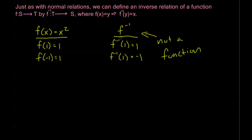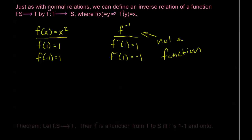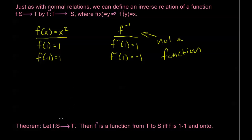So, how do we know that the inverse of a function is still going to be a function? As we've seen, it's not always a function — some functions are not invertible into functions in this way. We do have some special criteria that help us out, though, and we learned about them in the last video. We have this theorem: if I let f be a function from s to t, then f inverse, the inverse relation of f, is a function from t to s if and only if f is one-to-one and onto.